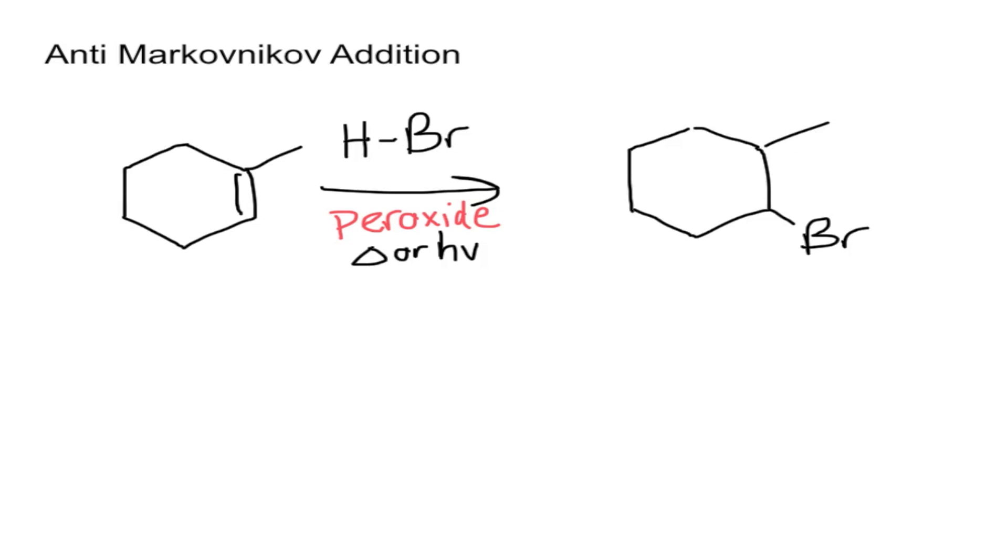A Markovnikov addition essentially would add to make the most stable carbocation. Anti-Markovnikov gives you the opposite addition. As you can see the overall reaction for this, this is a Markovnikov addition,